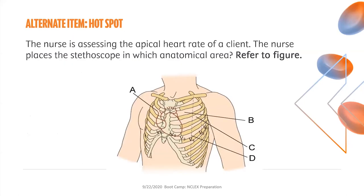We have another alternate item called a hotspot. The nurse is assessing the apical heart rate of a client. The nurse places the stethoscope in which anatomical area? You would click on the correct area in the figure. The answer is option D — the apical heart rate is best assessed by placing the stethoscope in the mitral area, located in the fifth intercostal space on the left side of the chest at the apex of the heart. The aortic area is in the second intercostal space right of the sternum; pulmonic is at the second intercostal space left of the sternum. Remember the apical heart rate should be assessed for one full minute.